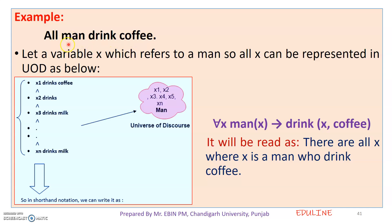Here is an example: 'All men drink coffee.' Since this statement uses 'all,' we can use the universal quantifier. Suppose x is the variable representing 'man.' We can then represent 'all men drink coffee' using the universal quantifier.